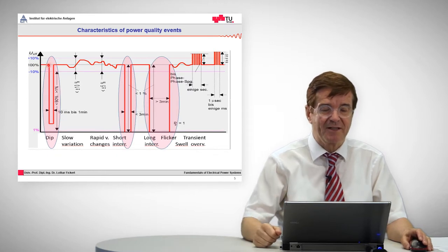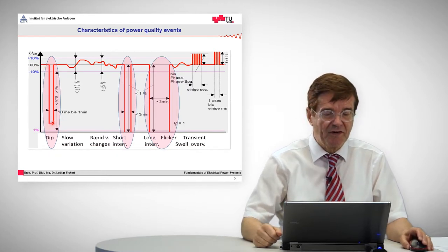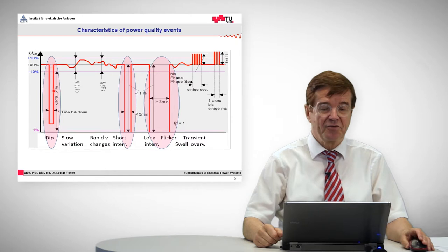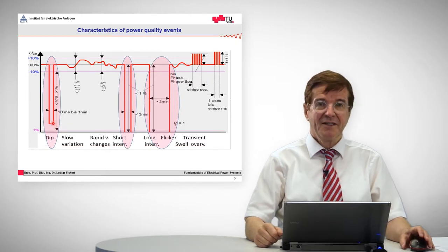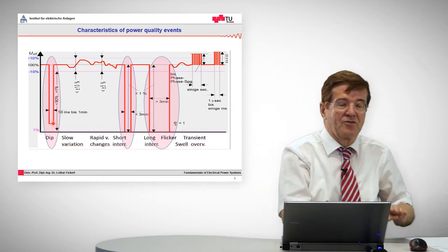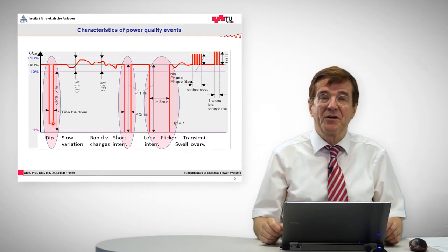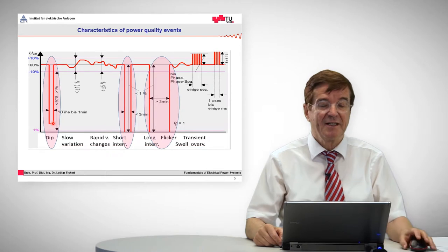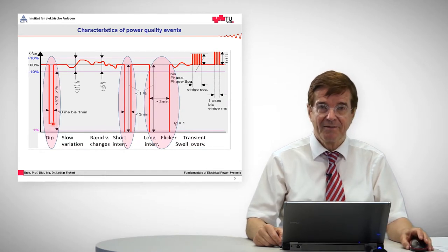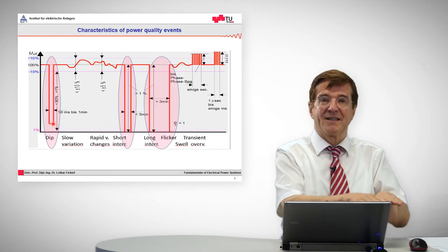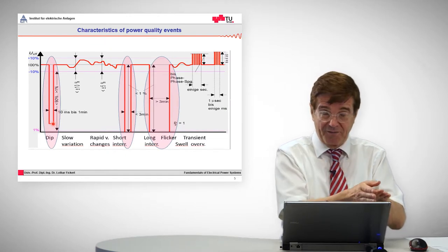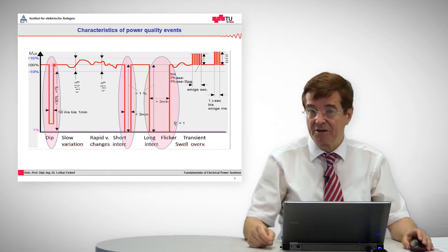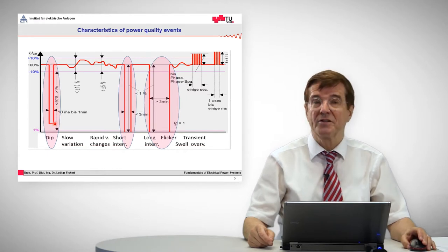Let us look at what happens when the voltage goes down to very low values — something like 10% of the nominal voltage. That is due to a short circuit somewhere in the grid. At the point of the short circuit, the voltage goes down to zero. In the surrounding area, we have some residual voltage, also in the order of 5 to 10%, and that is felt by everybody in the grid. This low voltage persists as long as the short circuit current is flowing, but when it is tripped off, the voltage recovers and we have our good and perfect voltage again. These events are called voltage dips.